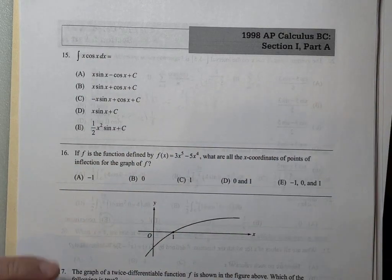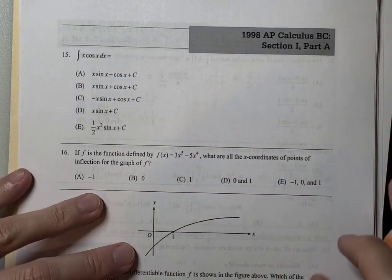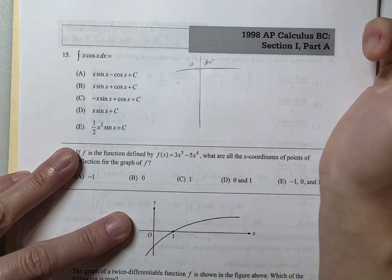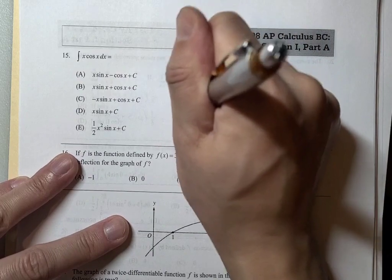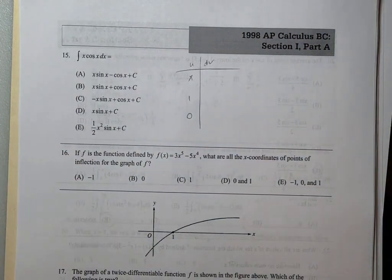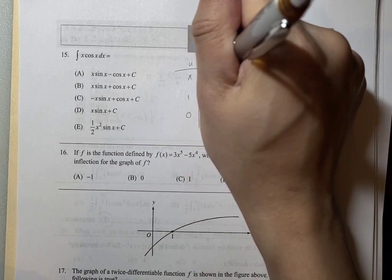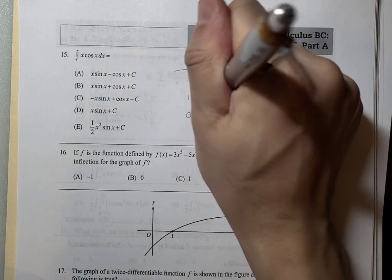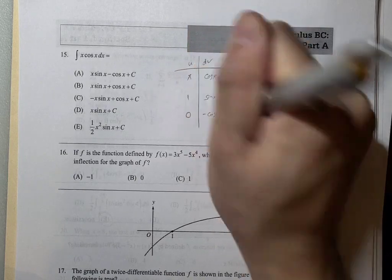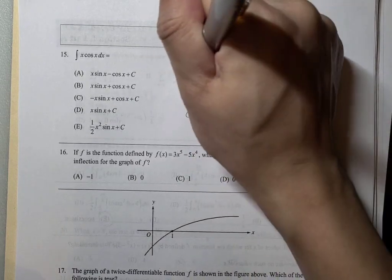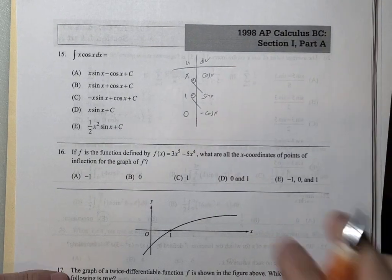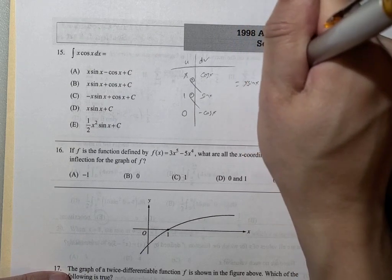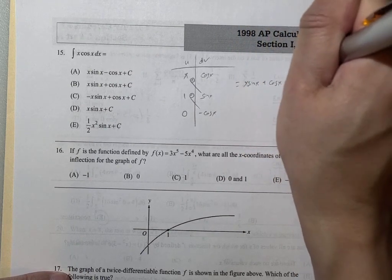The integral of x·cos(x)dx — this is a classic integration by parts. Using the tabular method: u = x (differentiates to 0), dv = cos(x)dx. We go diagonally and alternate signs starting from positive. Multiplying the diagonals together gives x·sin(x) + cos(x) + C.